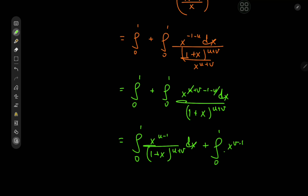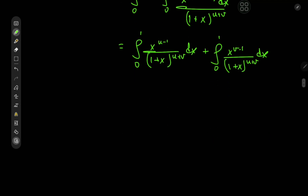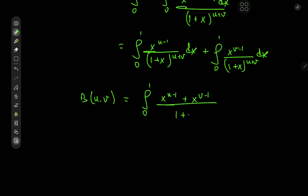And there we have the proof. All we have to do now is combine the two integrals and we have beta(u, v) equal to the integral from 0 to 1 of x to the u minus 1 plus x to the v minus 1 divided by 1 plus x to the u plus v dx.